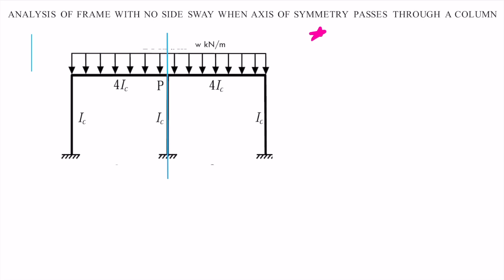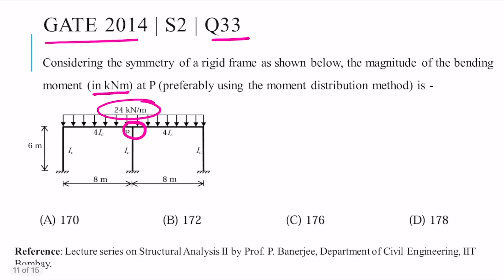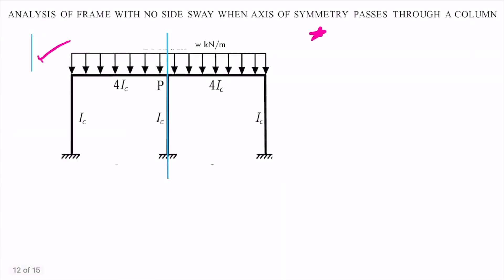This case is similar to what is given in our question. Here we have a symmetric frame, the loading is symmetric, and we have one column which passes through the axis of symmetry. Let us draw the deflection pattern for this frame under this loading.